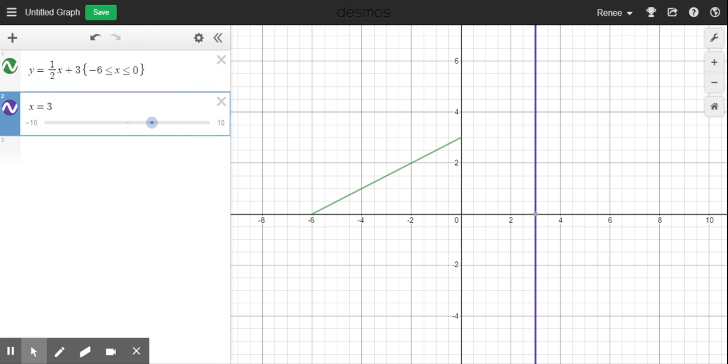So in this case, I am not restricting the X value because it's always there. What I am doing is I'm restricting the values for Y. So I'm looking at the range. I use the same notation. So again, my curly bracket.